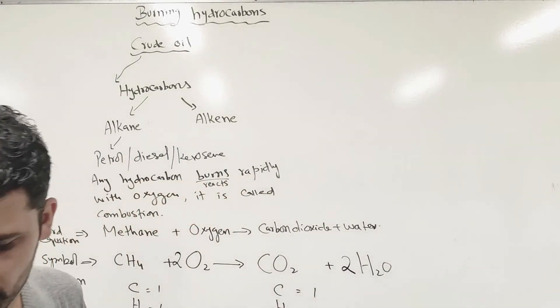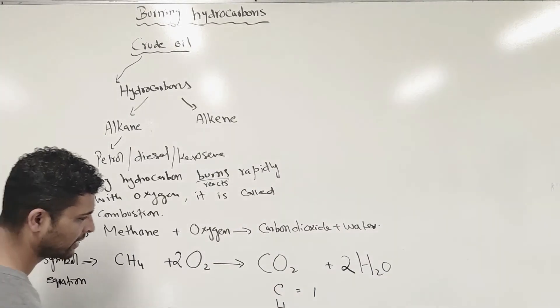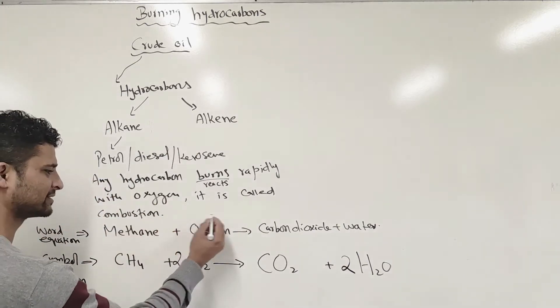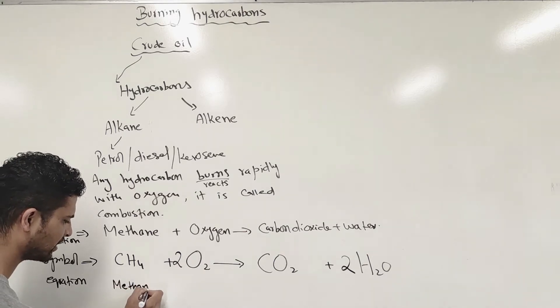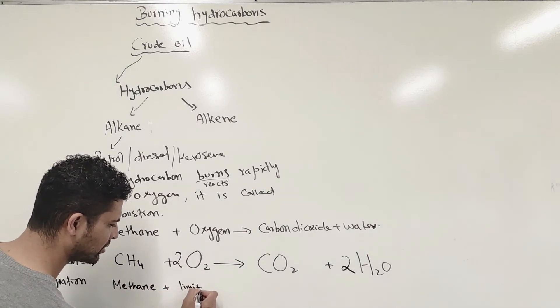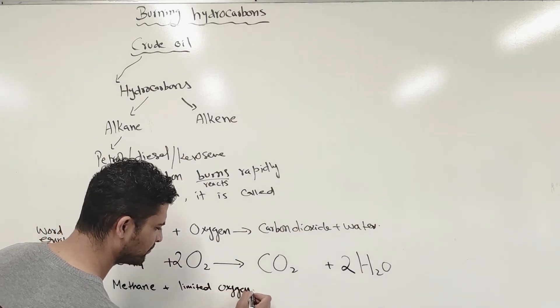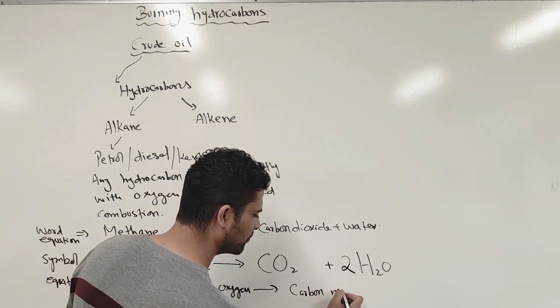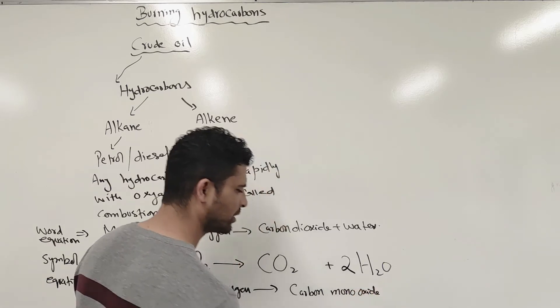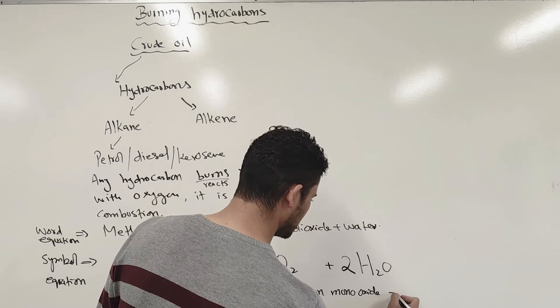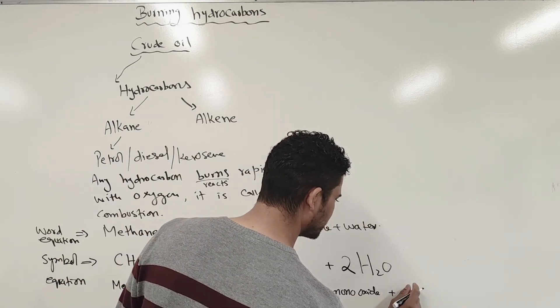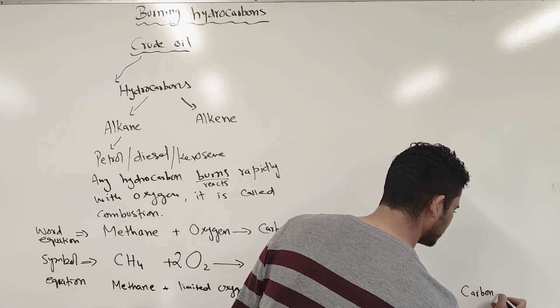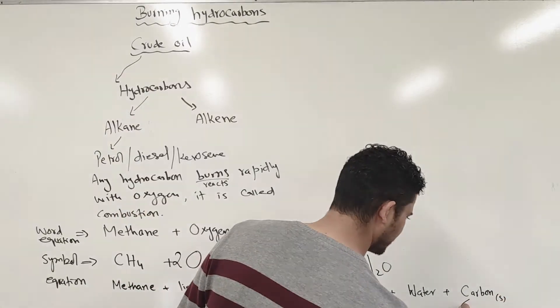But if you don't have good supply of oxygen, you close this, your flame will be yellow. If I remove this part and try to burn methane gas in limited oxygen - no good supply of oxygen - it will produce carbon monoxide. Mono means one, oxide means oxygen. So monoxide is one oxygen.